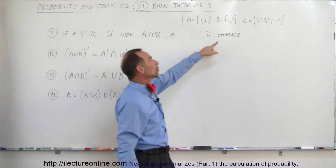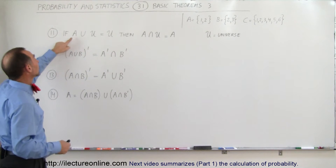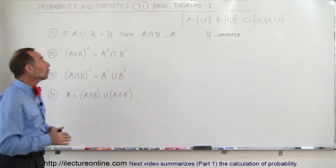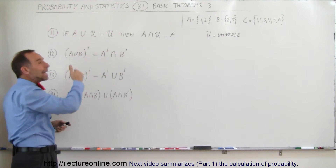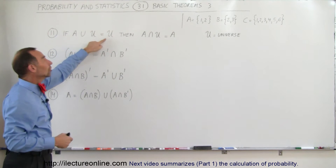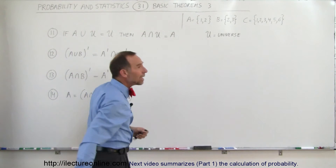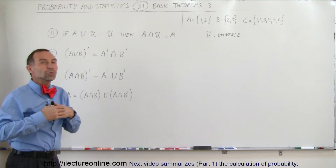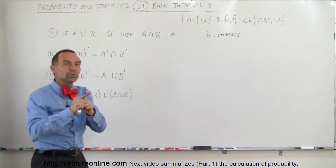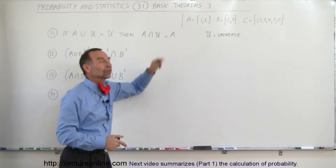First of all, this is a new symbol we haven't seen yet — this is called the universe, representing all possible outcomes. If event A union the universe equals the universe, that means all outcomes in A already exist in the universe, so A union U equals U. Similarly, A intersection U equals A, since all outcomes in A also belong to U, and the intersection gives only those common to both — which are exactly the outcomes in A.